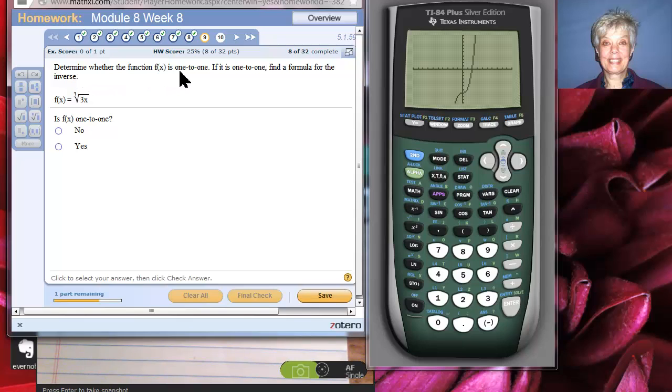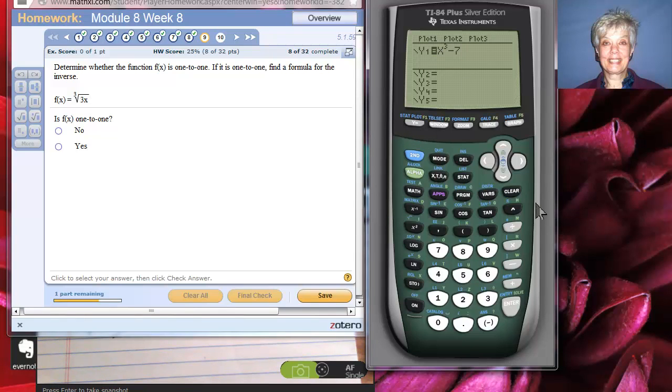Determine whether the function f of x is 1 to 1. If it is 1 to 1, find a formula for the inverse. So, we're going to graph it first. Clear. And now, I'm going to go find the cube root. We'll take the cube root of 3x and graph it. Yes, this is definitely a 1 to 1 function.